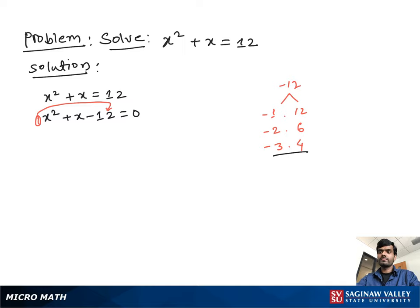Now find a pair of numbers which you multiply give us negative 12 and an addition gives us positive 1. That number is negative 3 and 4. So you can write x square minus 3x plus 4x minus 12 equal to 0.